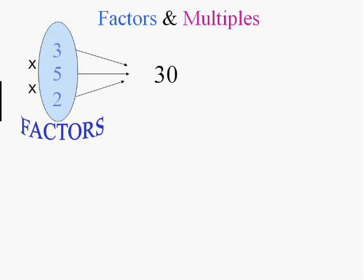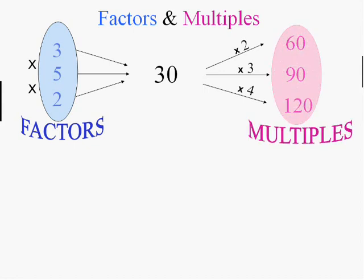Don't mix them up with multiples. 60 is a multiple of 30 because 30 goes into it. 90 is a multiple of 30 because 30 goes into 90 and 120 is a multiple of 30. As you can see, there are way more multiples than there are factors. If you really know what you're talking about here, tell me what number is both a factor and multiple of 30. Well that would be 30 itself.